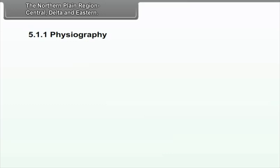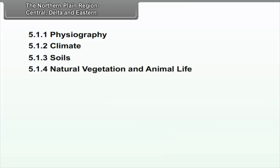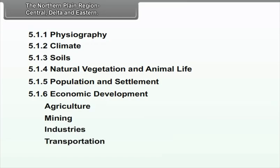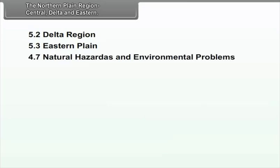Chapter 5: The Northern Plain Region — Central, Delta and Eastern. We will study the following points in this chapter: Physiography, Climate, Soils, Natural Vegetation, Population and Settlement, Economic Development which includes Agriculture, Mining, Industries, Transportation, Delta Region, Eastern Plain, and Natural Hazards and Environmental Problems.